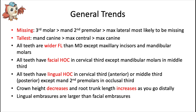Now let's apply these terms to overarching trends in the permanent dentition. Teeth most likely to be missing: third molars are most common, then mandibular second premolars, then maxillary laterals. As for tallest crowns, first are mandibular canines, then maxillary centrals, and finally maxillary canines.